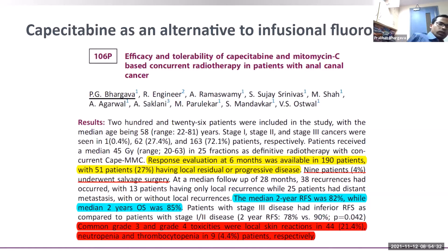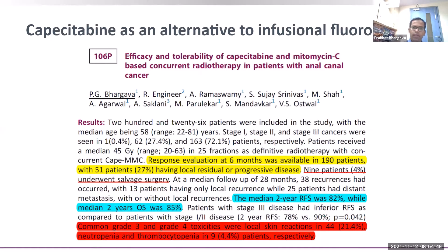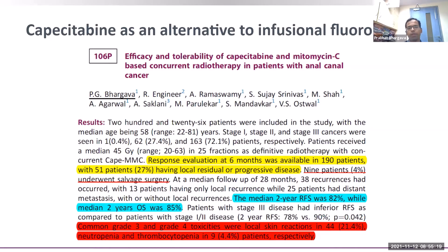Can 5-FU be replaced by capecitabine? Small phase 2 trials of around 30–50 patients each showed capecitabine with mitomycin is equivalent to 5-FU. A dataset presented at ESMO — one of the largest capecitabine-mitomycin series with response evaluation in around 90 patients — showed 73 percent response, only 9.4 percent required salvage surgery, 2-year relapse-free survival was 82 percent, and 2-year OS was 85 percent. Common grade 3–4 toxicities were local skin reaction, neutropenia, and thrombocytopenia at around 21 percent.